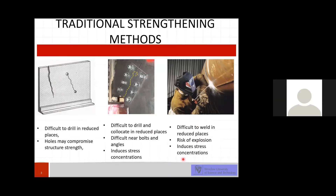However, in some cases we have a really challenging problem with these structures and repairing patterns, because sometimes it's difficult to drill and it's not easy to bolt the connections. Hot riveting is also not possible to perform in various long-term operated structures. The same case applies to welding. In old steels, we have a problem with non-metallic inclusions, and also in pipelines, we have the risk of explosion.